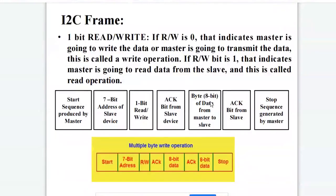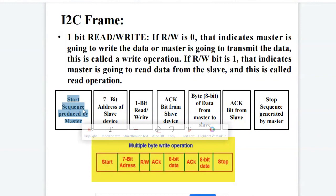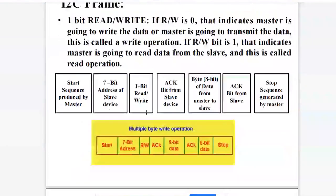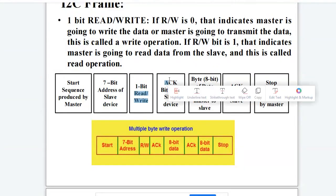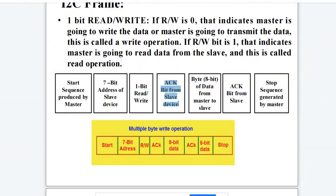Now let us see how an I2C frame looks like. This is a single byte write operation. First, the master produces a start condition, followed by a seven-bit address of the slave device, then one read/write bit, an acknowledgement bit from the slave device, then a byte (eight bits) of data from master to slave, another acknowledgement bit from the slave device, and finally a stop sequence generated by the master device.